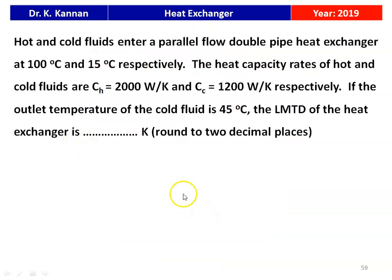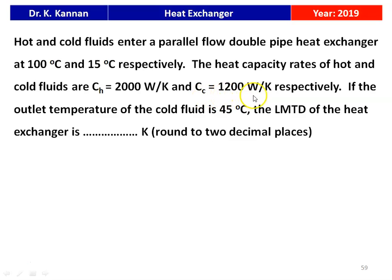The first question is from the 2019 question paper. Hot and cold fluid enter a parallel flow double pipe heat exchanger at 100°C and 15°C respectively. The heat capacity rates of hot and cold fluid are CH = 2000 W/K and CC = 1200 W/K respectively. If the outlet temperature of the cold fluid is 45°C, the LMTD of the heat exchanger is 57.71 Kelvin.